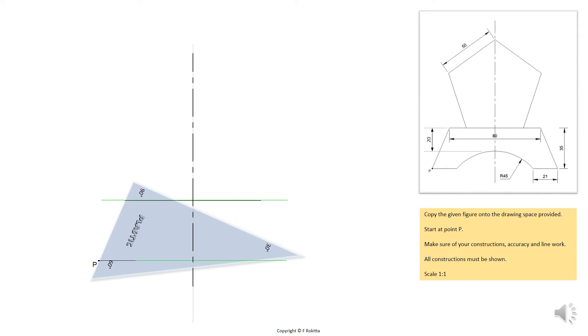Place your set square at point P and at the end of the line as indicated and draw a solid line to represent the diagonal line shown in the schematic.